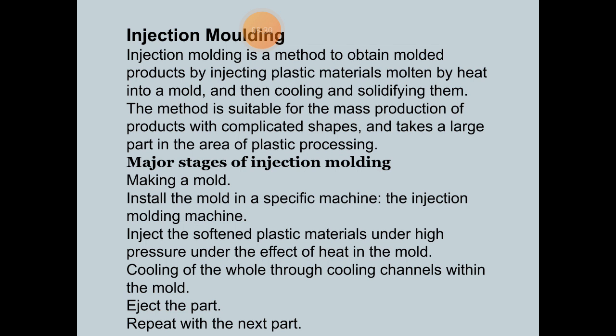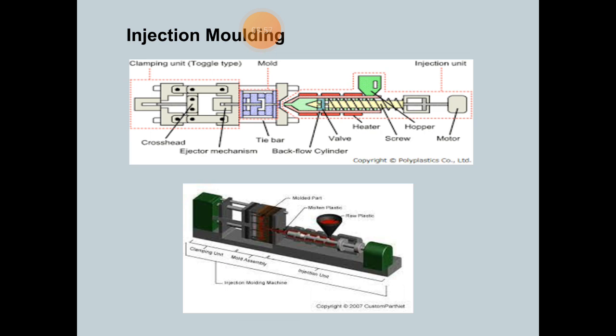There are various stages in injection molding: making a mold, installing the mold in a specific machine. The injection molding machine injects the softened plastic material under high pressure and under the effect of heat into the mold. Cooling occurs through cooling channels within the mold, then the part is ejected and the cycle repeats with the next part.